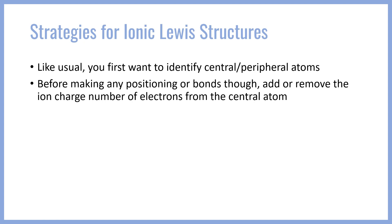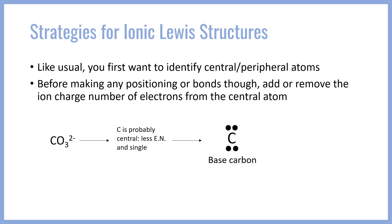So whatever the charge of the polyatomic ion is, before we do any drawing of valence electrons, we're just going to add or remove that many electrons from the central atom. So let's go ahead and look at the carbonate ion, CO3 2-. Carbonate is going to have C as the central atom because it's less electronegative and singular, whereas oxygen is more electronegative and plural. So C is going to be our central atom.